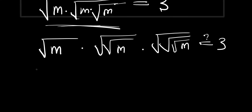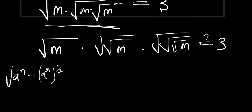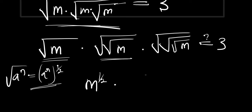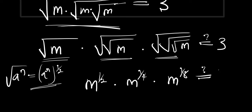According to the index law, the square root of a to the power n equals a to the power n times 1 over 2. So each square root of m means m to the power 1 over 2. The next layer gives m to the power 1 over 2 times 1 over 2, that is 1 over 4. And the outermost gives 1 over 2 times 1 over 2 times 1 over 2, which is 1 over 8. So we have m to the power 1 over 8 equals 3.